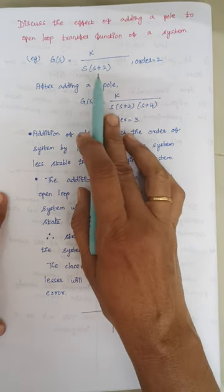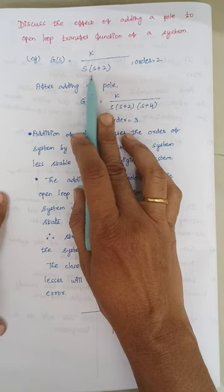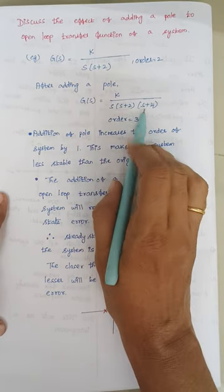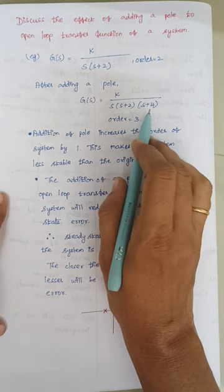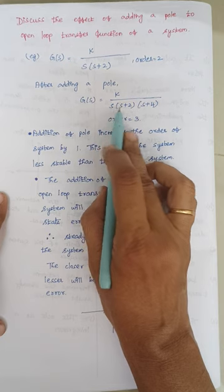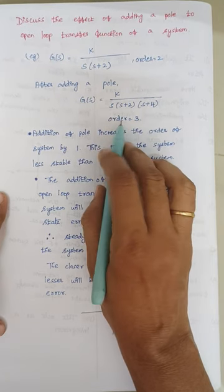Consider this example. Here s into s is s square, so the order is 2. After adding a pole, s plus 4 is added. The terms in the denominator are known as poles. Therefore here the order is 3, that is s into s into s becomes s cube, therefore the order is 3.